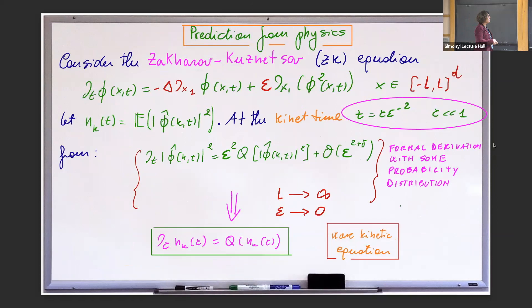Let me make this a little bit more mathematical, and let me start with a different equation than what you have seen before. This is the Zakharov-Kuznetsov equation, which is just a higher-dimensional KdV equation.